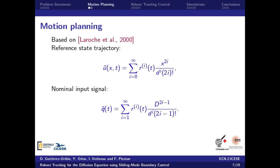Let us start with the obtention of a reference profile for the diffusion equation ruled by the output reference r. Following the work of Laroche et al. 2000, the reference profile and the nominal control can be obtained from the reference r(t) and all its derivatives, as shown in this slide.